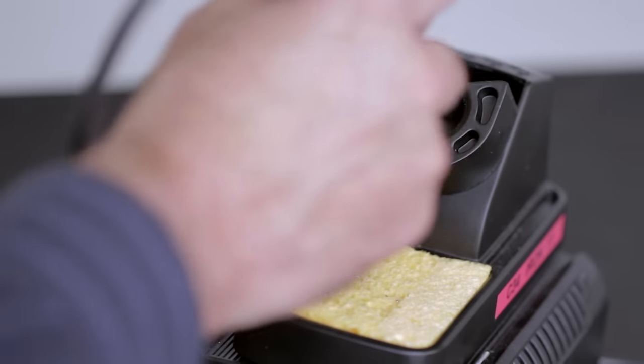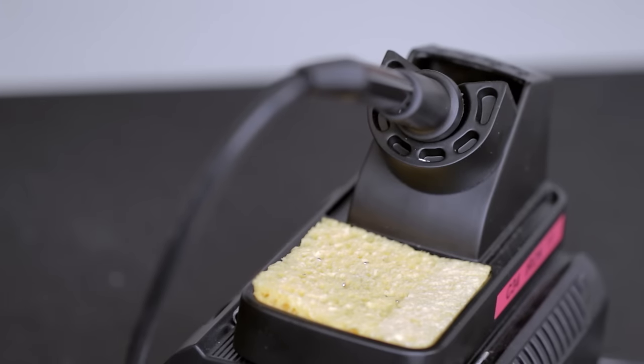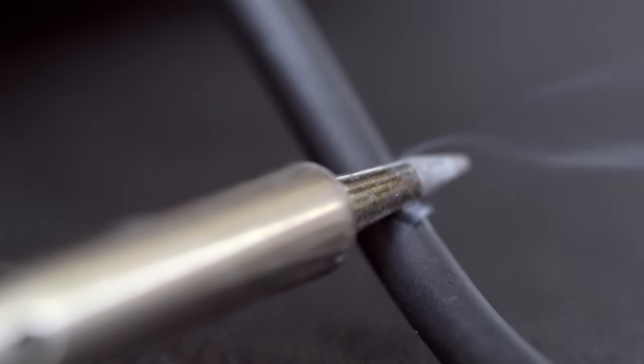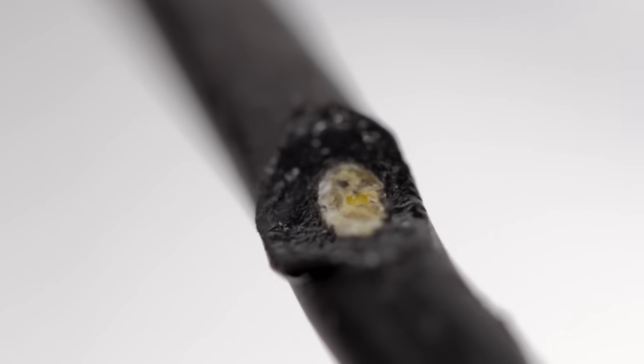When you're not soldering remember to keep the iron in the holder. Be careful when you're soldering not to put the iron in contact with the lead. Some soldering irons have PVC coated leads which will melt through easily and pose a risk of electric shock if touched.